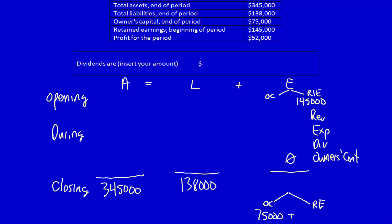Profit for the period. Well, profit is made up of revenue minus expenses, so I know revenue minus expenses equals $52,000. I've put in all the information. Now let's put in our equal signs and our pluses.